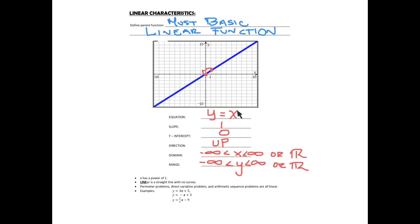The line linear is a straight line with no curve. So it's a straight line that you can draw with a ruler, and usually you're going to find it in perimeter problems, direct variation, arithmetic sequences. They are all going to be linear.